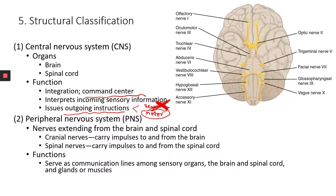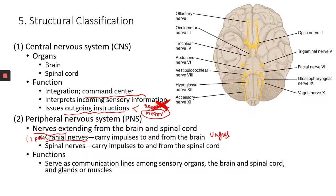The PNS consists of nerves. You have nerves extending from the brain called cranial nerves — we have 12 pairs of cranial nerves. Both of these nerves innervate your brain and neck area, but there is one nerve, the vagus nerve, that extends into your thoracic cavity and abdominal cavity, so it controls some of the visceral organs.